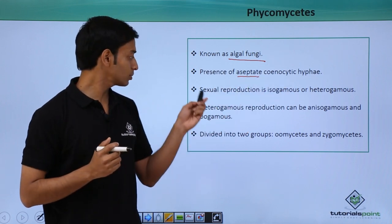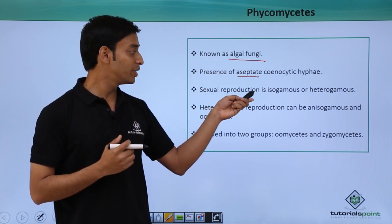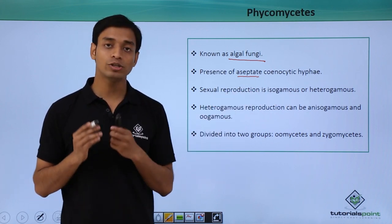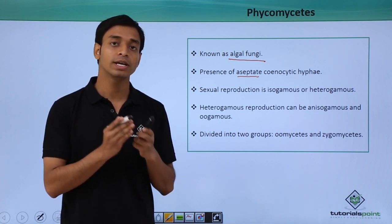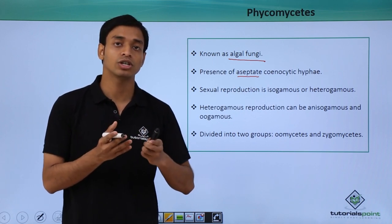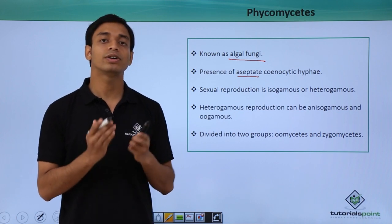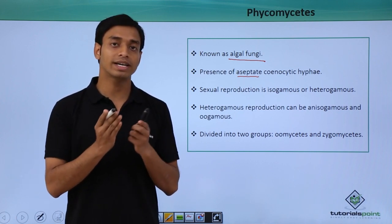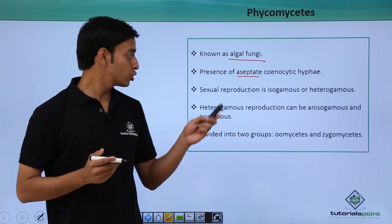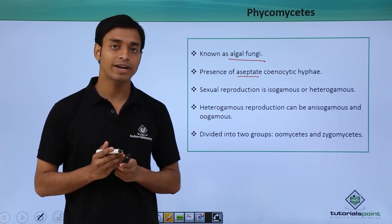They are mostly branched. The sexual reproduction in phycomycetes is mostly isogamous or they can also be heterogamous. Isogamous sexual reproduction means the male and the female gametes can be of similar shape and structure — basically the same type. Whereas heterogamous sexual reproduction means these two gametes can be of different texture, shape, and structure.